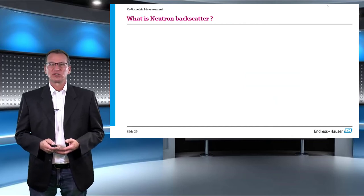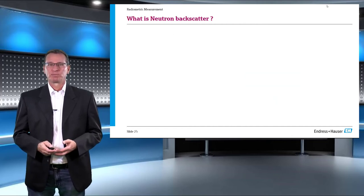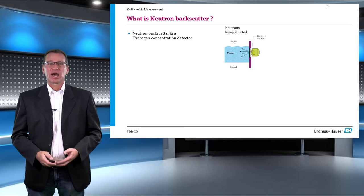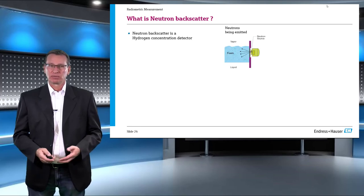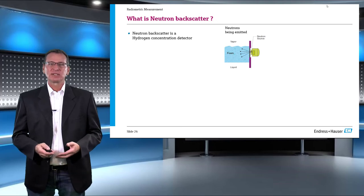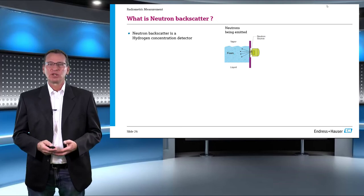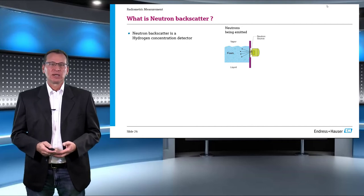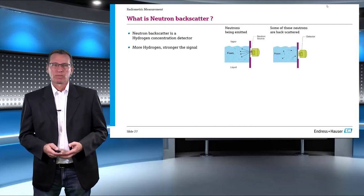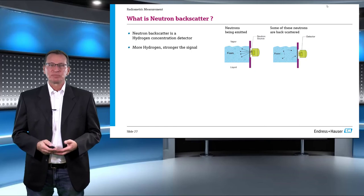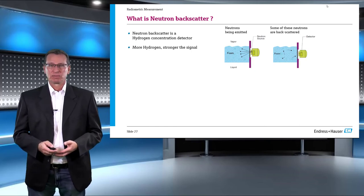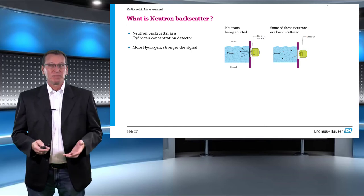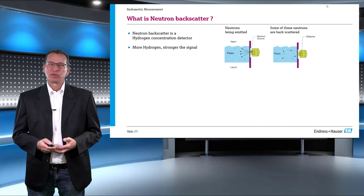So what is really a neutron backscatterer? It is nothing but a hydrogen concentration detector. A neutron backscatterer has an americium-beryllium-241 isotope emitting fast neutrons into the coke drum. The unit contains both the source and the detector. The emitted neutrons interact with the process inside the coke drum and get reflected back.